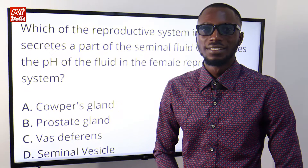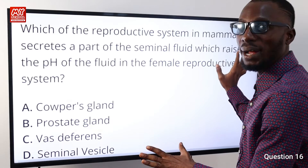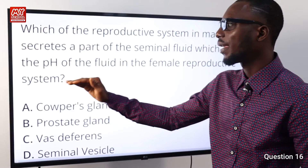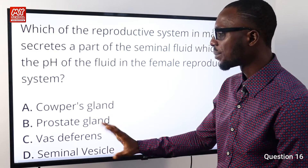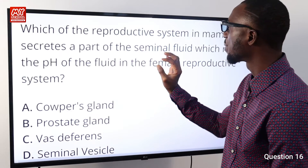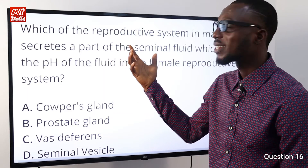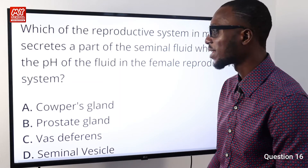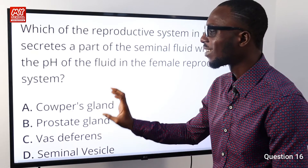Question number sixteen: which part of the reproductive system in mammals secretes part of the seminal fluid that raises the pH of the fluid in the female reproductive system? The prostate gland contributes about 30% of the seminal fluid, making it contain essential nutrients like calcium, sodium, zinc, citric acid, and acid phosphatase. So option B is correct.